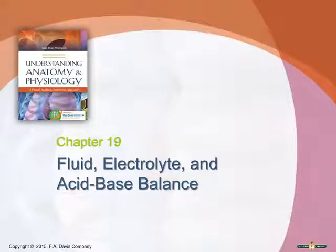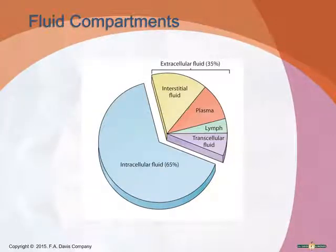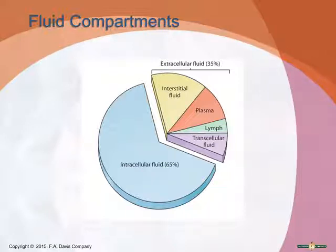Now we're going to talk about fluid, electrolyte, and acid-base balance. That's a big part of what your urinary system does; your respiratory system plays a part as well. The fluid compartments: most of your body's water, about 65%, resides inside the cells — this is called intracellular fluid. The other 35% is called extracellular fluid, which includes interstitial fluid between cells in tissues, and fluid within vessels like blood plasma and lymph.